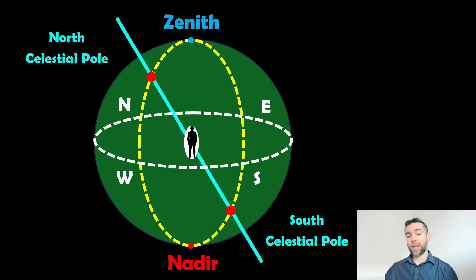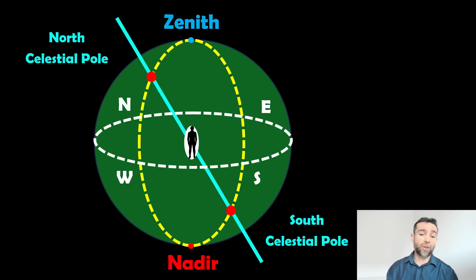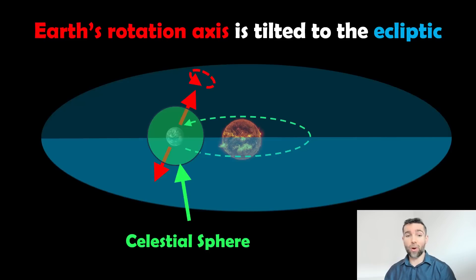So the meridian goes through all of these points. The meridian will go through the zenith, the nadir, the north celestial pole, and the south celestial pole.